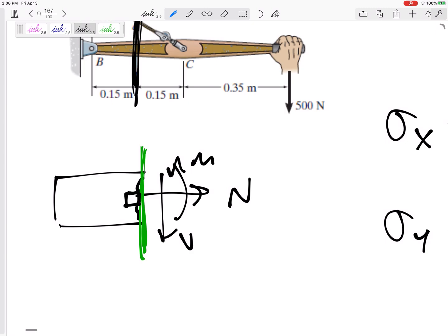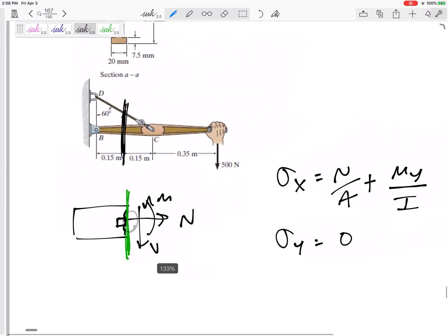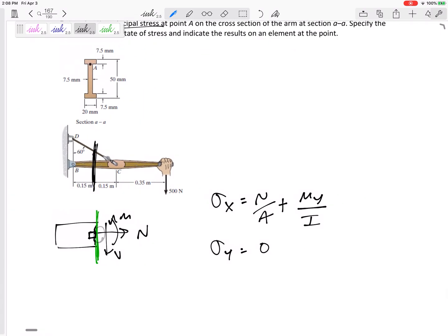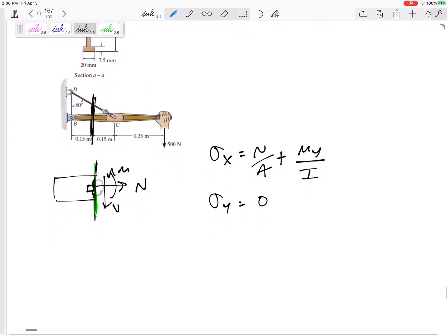My element is right here and so we're not cutting it. We don't have any forces right here. We're only looking at the forces right here on this face. For 2D, these 2D problems where we cut to find the stresses, our Sigma Y is always going to be zero.